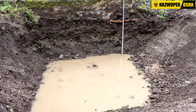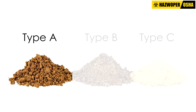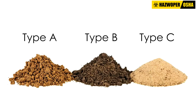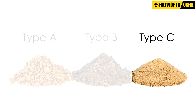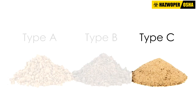Therefore, type A soil is the most stable soil in which to excavate, whereas type C is the least stable soil. It is important to remember that a trench can be cut through more than one type of soil.